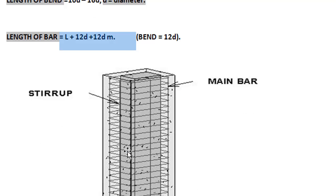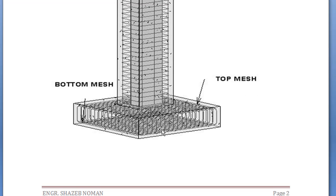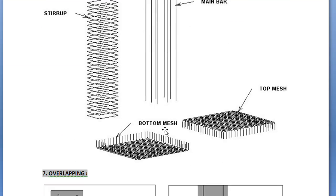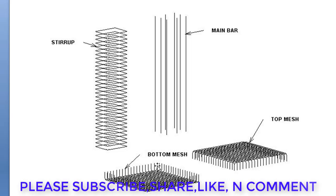Looking at a drawing showing a column and footing: the straight bars are called main bars, and the rings or ties are called stirrups. Below, the footing has a top mesh and bottom mesh. Displacing these elements gives us the individual components: main bars, stirrups, and top and bottom mesh.